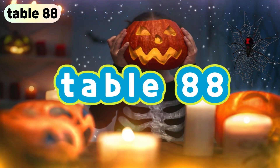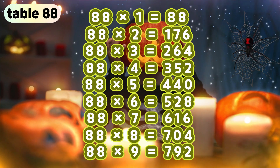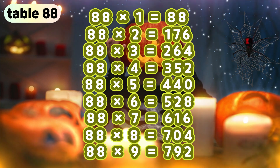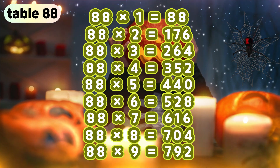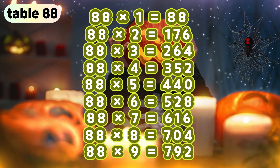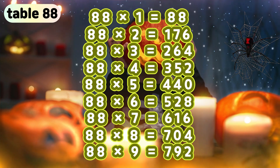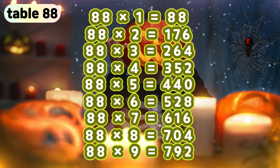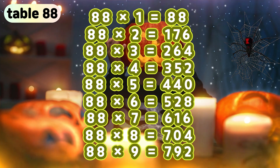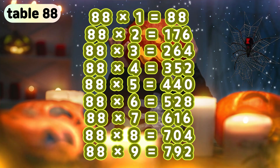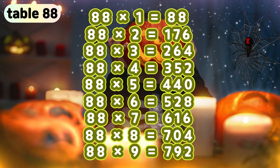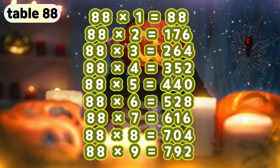Table 88. 88 times 1 is 88. 88 times 2 is 176. 88 times 3 is 264. 88 times 4 is 352. 88 times 5 is 440. 88 times 6 is 528. 88 times 7 is 616. 88 times 8 is 704. 88 times 9 is 792.